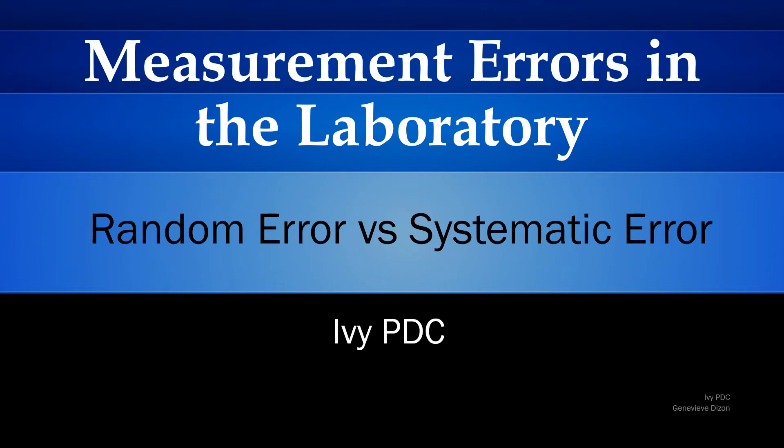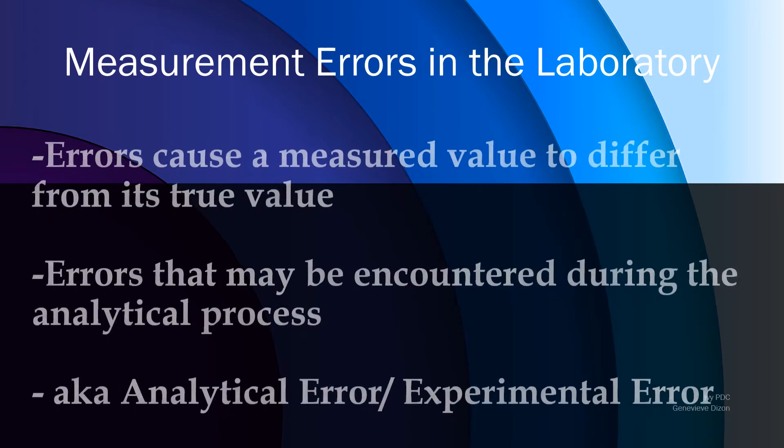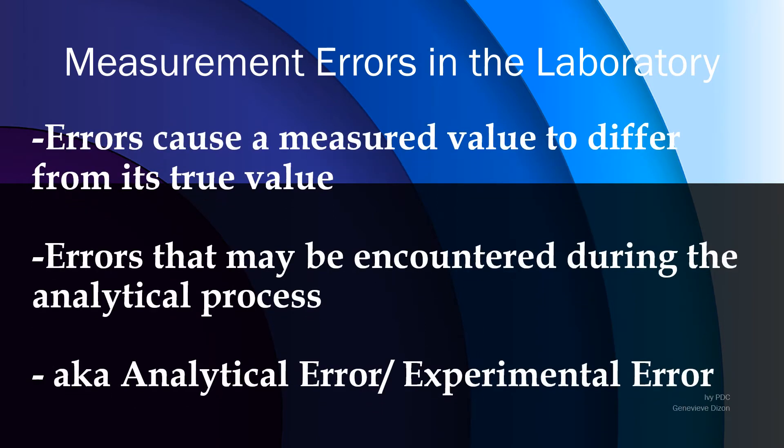Errors in the laboratory may occur during measurement or the analytic procedure. These errors may either be random error or systematic error. Errors that occur in the laboratory can cause a measured value to differ from its true value, and these errors may be encountered during the analytical process. That's why measurement errors in the laboratory are also known as analytical error or experimental error.